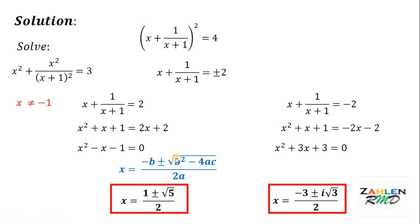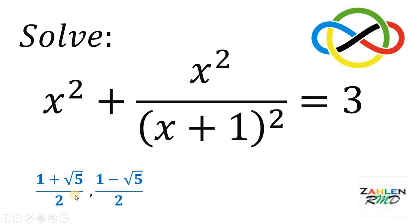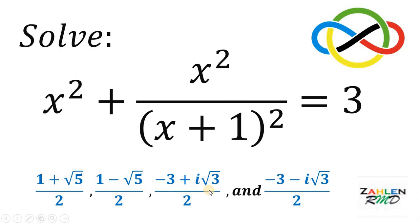Therefore, we have 4 possible values of x: 1 plus square root of 5 over 2, 1 minus square root of 5 over 2, negative 3 plus i times square root of 3 over 2, and negative 3 minus i times square root of 3 over 2. And we're done.